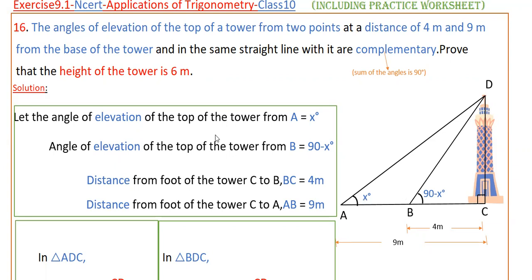So write the given values here and here you have to prove that the height of the tower, that is CD, is 6 meters. So we have to prove this.